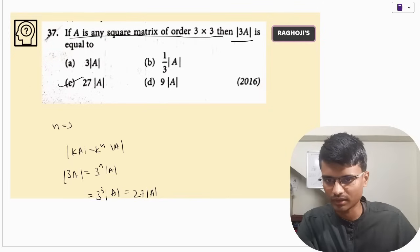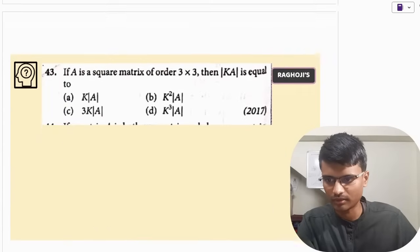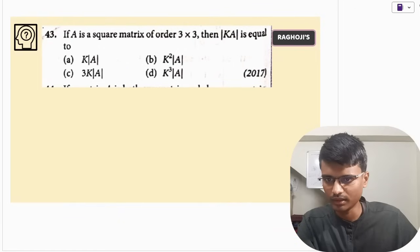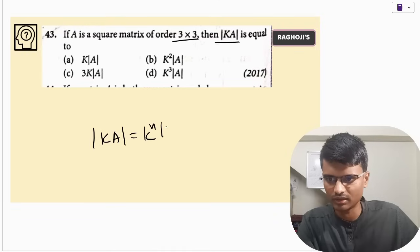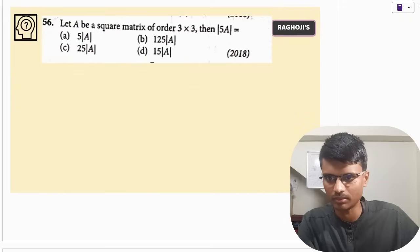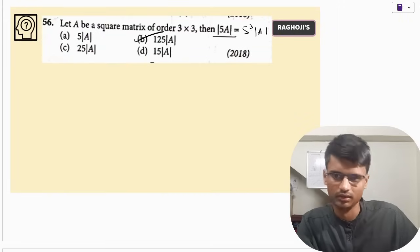Next question: again a 3×3 matrix, what is determinant of KA? Determinant of KA equals K to the power n times determinant of A, and n is 3, so it is K cubed times determinant of A — option D. Moving on, a similar question: this will be 5 cubed times determinant of A, which is 125 times determinant of A.